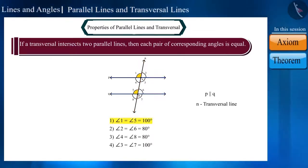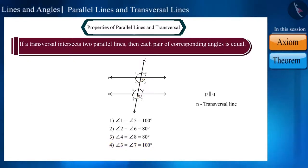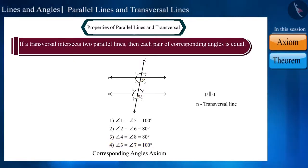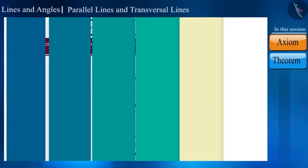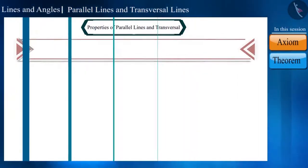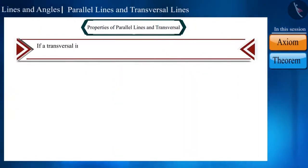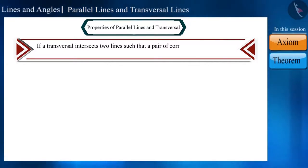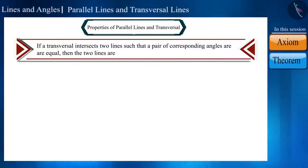This is what we call the corresponding angles axiom. If a transversal intersects two lines such that a pair of corresponding angles are equal, then the two lines are parallel to each other.